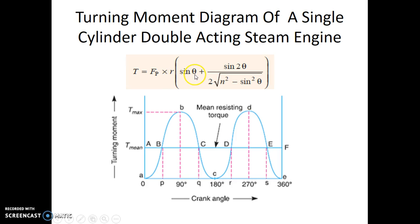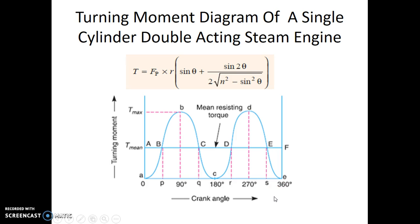Now, as theta is increasing, the torque also will be changing or increasing. If we plot a graph of the varying torque on the y-axis and angle theta in radians on the x-axis, we get a graph showing the variation of turning moment or torque. This graph is called the turning moment diagram. This turning moment diagram shows the variation of turning moment for one cycle, where one cycle here is one rotation.